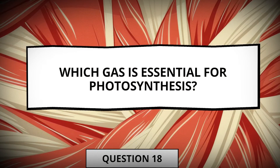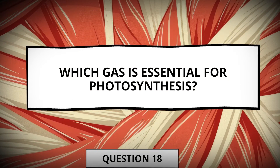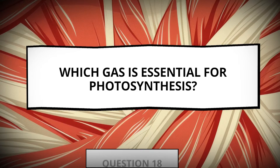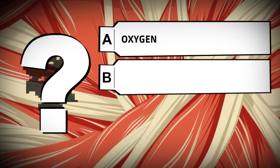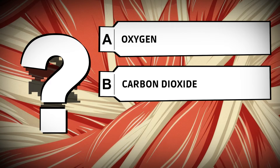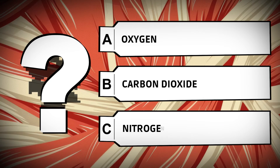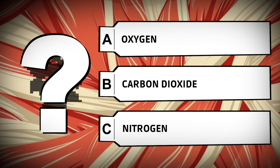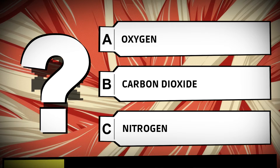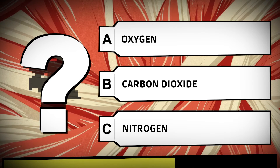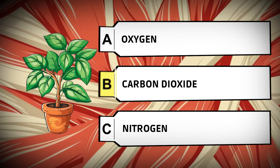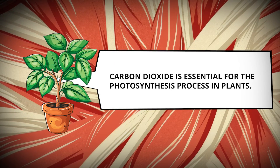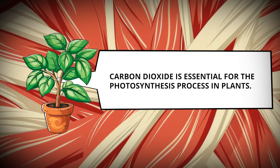Which gas is essential for photosynthesis? Oxygen, carbon dioxide, nitrogen. Carbon dioxide is essential for the photosynthesis process in plants.